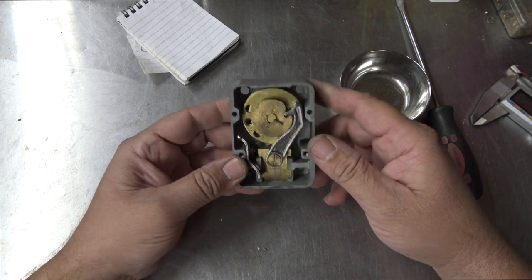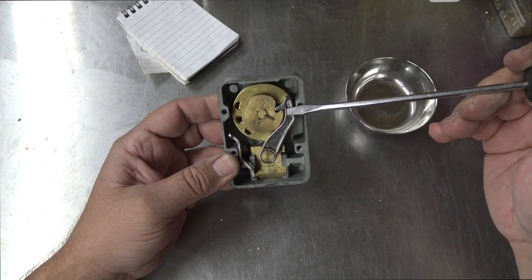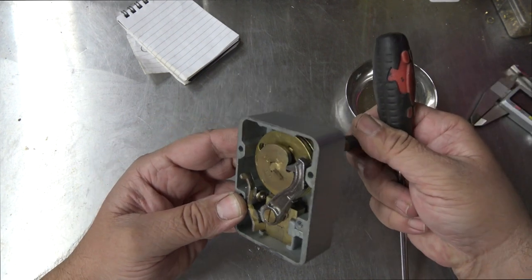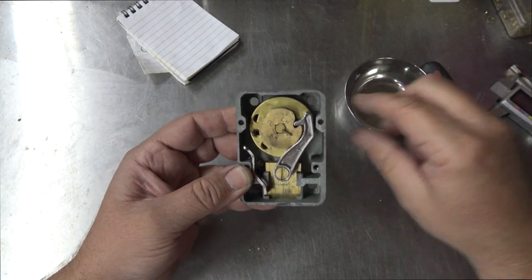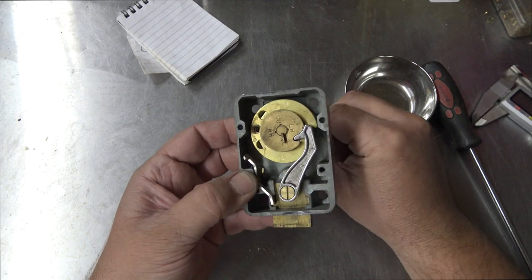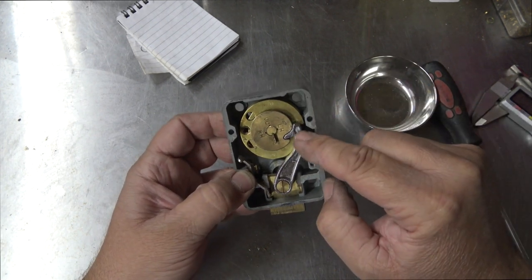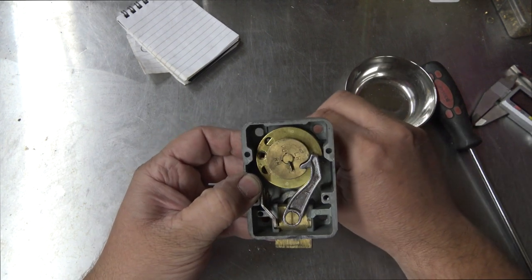So to start off with here, we have our bolt. So when the combination is correct, this arm will fall in, and it will, you can rotate these wheels all together, and it will pull the bolt back, just like so. So it's open at the moment, and it's locked, and it's this arm that's dropped in, allowing it to do it with this wheel at the back here.